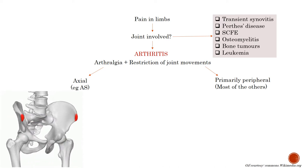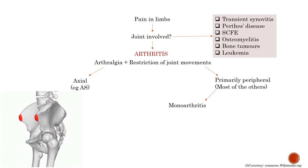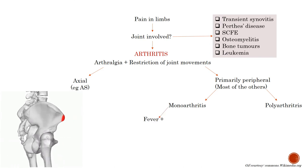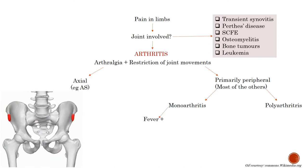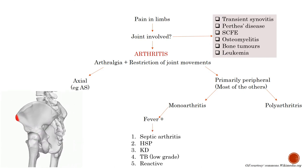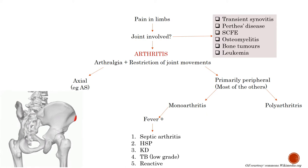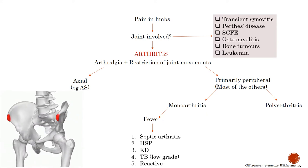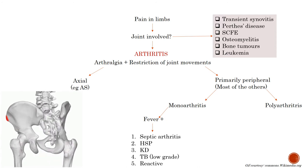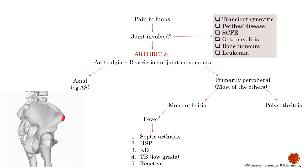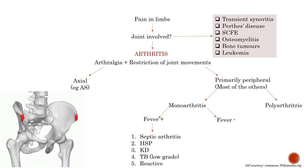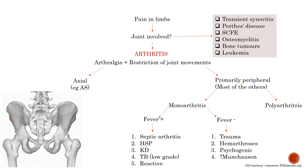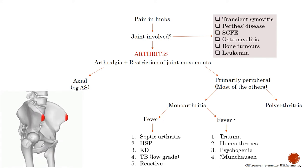If peripheral, you must assess whether it is monoarthritis or polyarthritis. In case of monoarthritis, you should look for fever. If fever is present, possibilities can be septic arthritis, Henoch-Schönlein purpura, Kawasaki disease, tuberculosis (in which low-grade fever is present), and reactive arthritis — though at times in tubercular arthritis, fever might not be present. If fever is not present, the possible differential diagnoses are trauma, hemarthrosis, psychogenic, and Munchausen syndrome (battered baby syndrome).